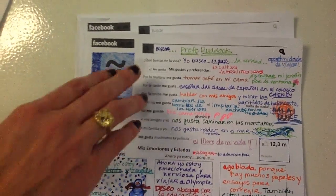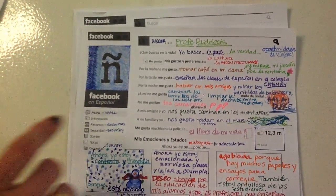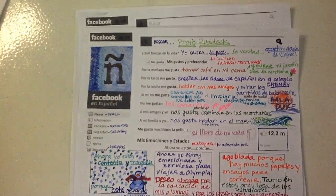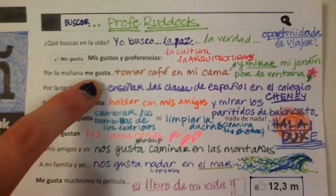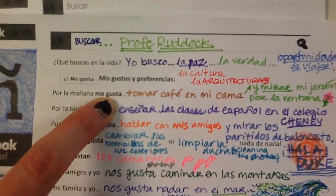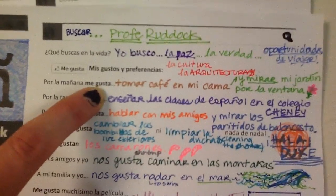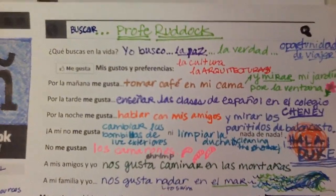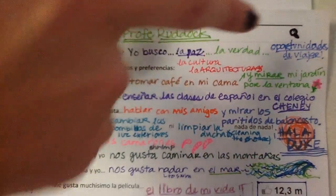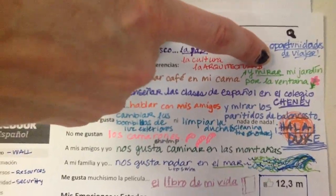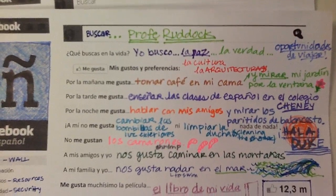Each one of these sentences is practicing gustar. You'll notice that the first one says por la mañana me gusta — in the morning I like. Notice that gusta is singular here, so you have to put either an infinitive or one singular thing that you like. I did two different infinitives. I said I like to tomar café in mi cama — I like to drink coffee in bed. También I like to mirar — to watch — mi jardín por la ventana. Ventana was window.